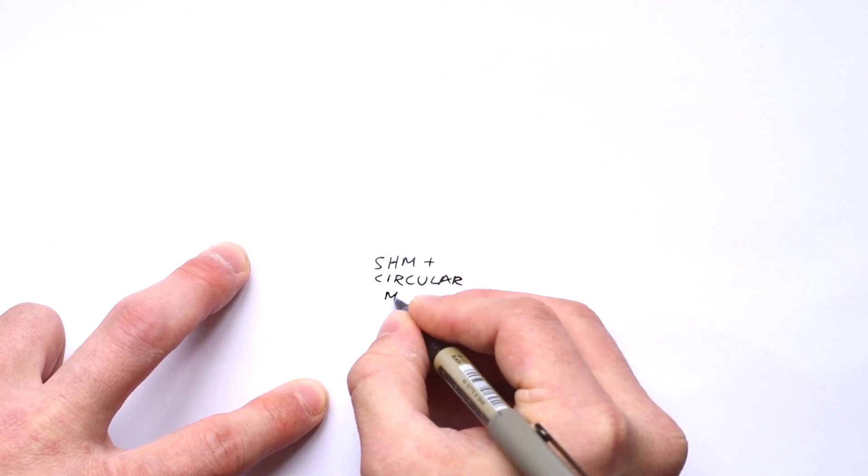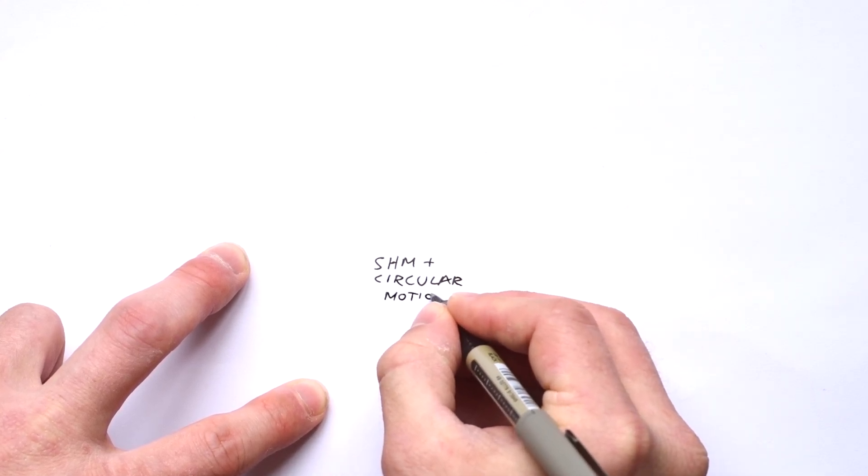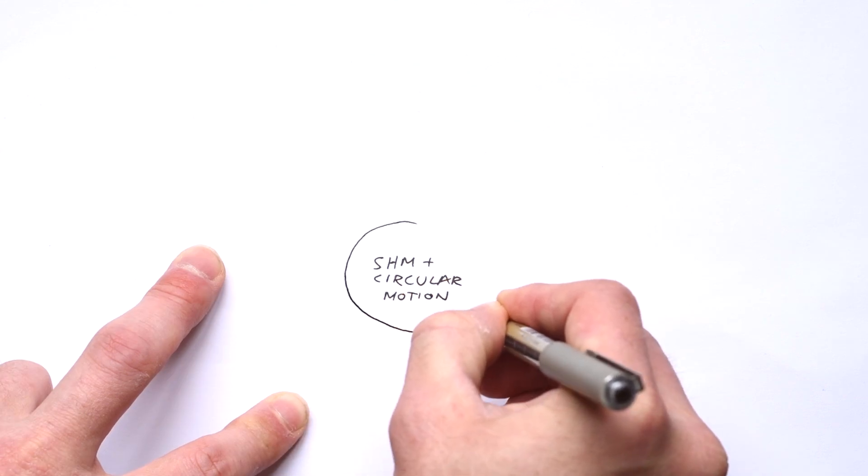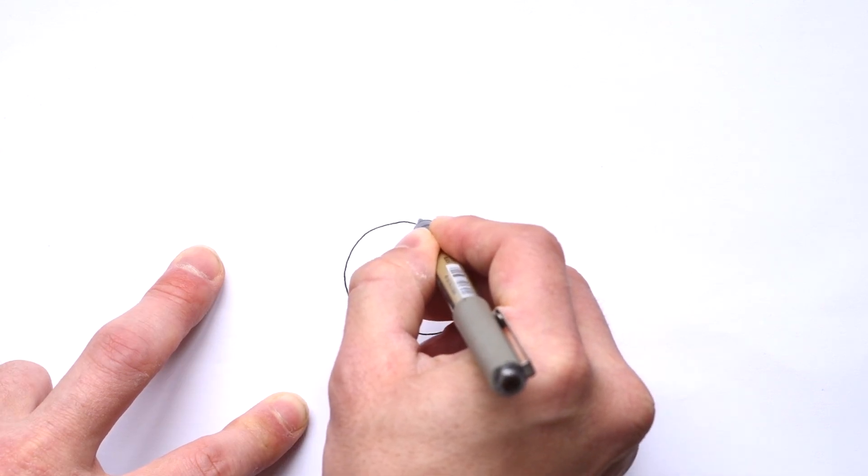Okay, so I'm going to make a mind map on simple harmonic motion and circular motion as fast as possible. You can download the PDF version of this from the link down below.